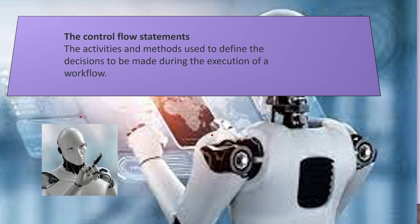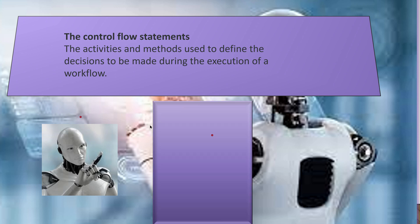Let us see what activities or methods come under control flow statements in UiPath Studio. We have: if activity, while activity, do while, for each, switch, and parallel. We have these many control flow statements. Let us see each of these in detail.